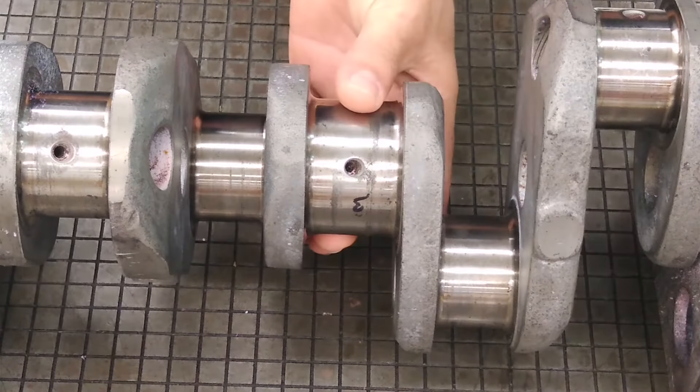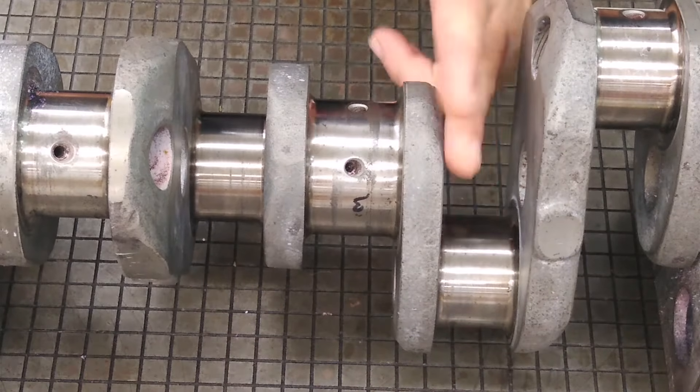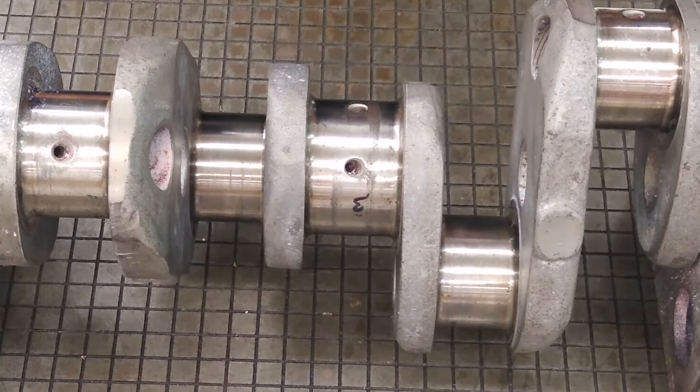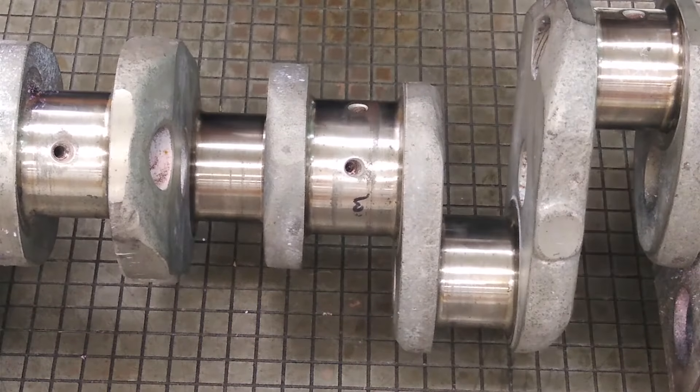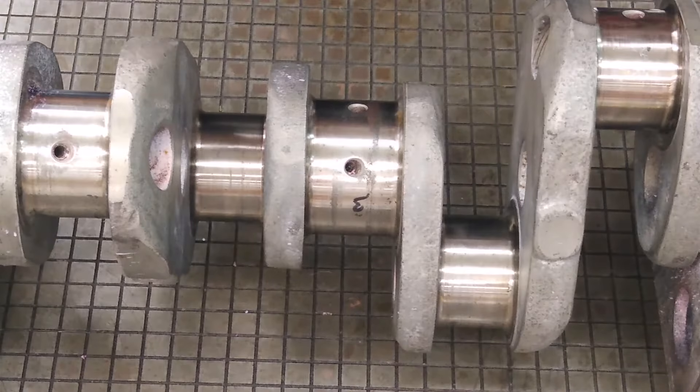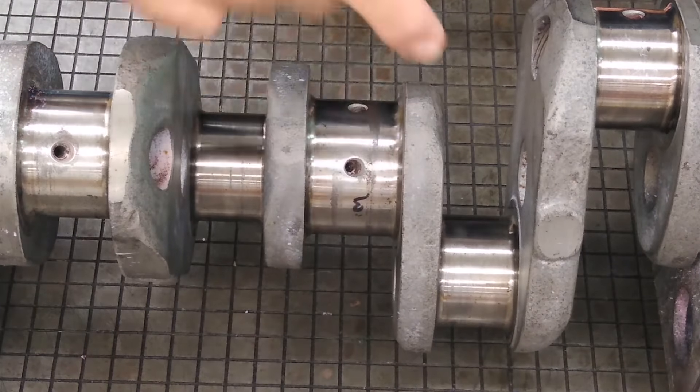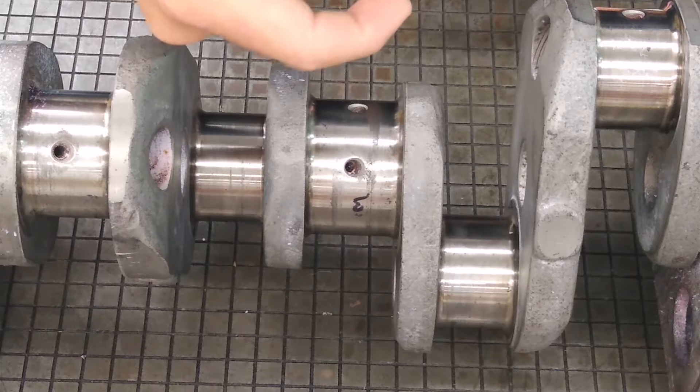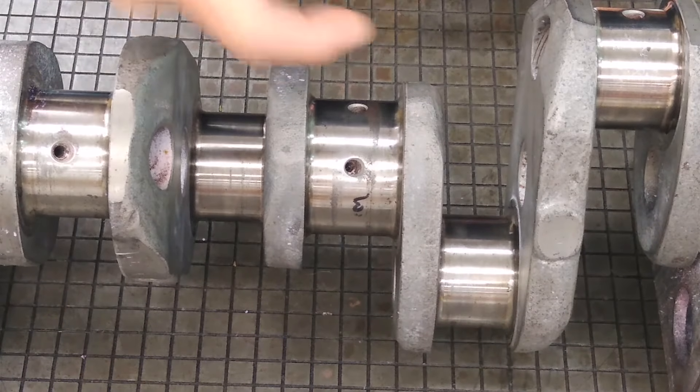Right now we're looking at the number three bearing journal. This is a crank pin. This is a bearing journal. The way you would measure for out of round is to measure the diameter of this crank pin, 90 degrees offset. You measure in one direction and then you rotate 90 degrees and you take a second measurement and compare the two.